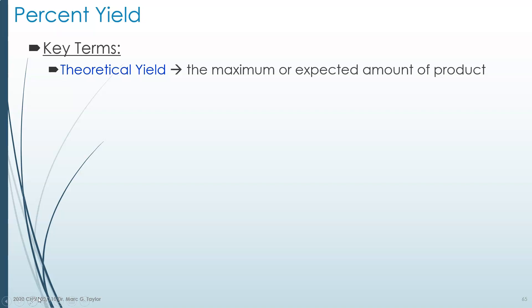We have several terms we need to understand first. Theoretical yield - this is the maximum amount that you expect to produce in a chemical reaction.